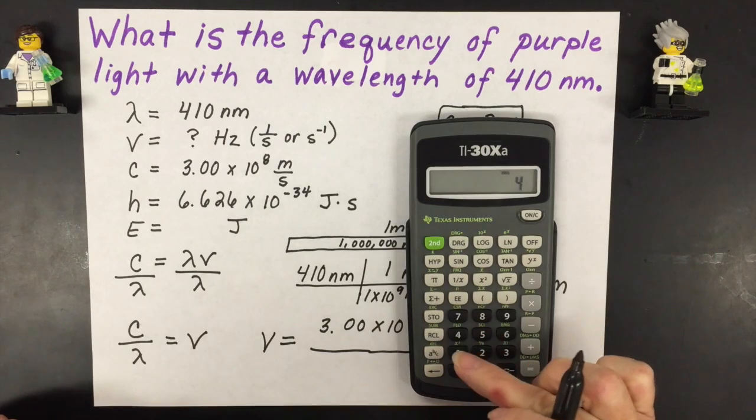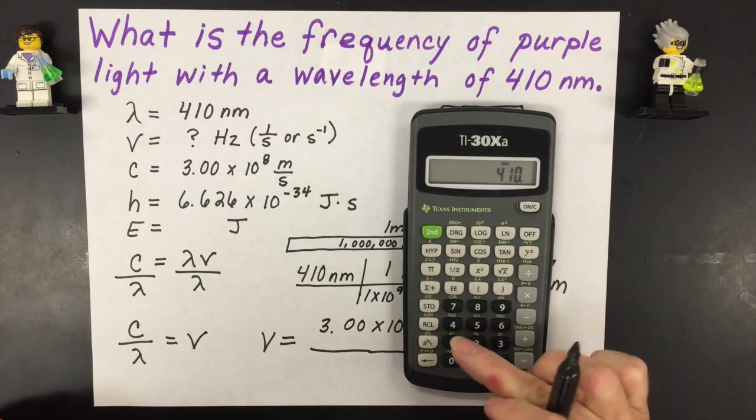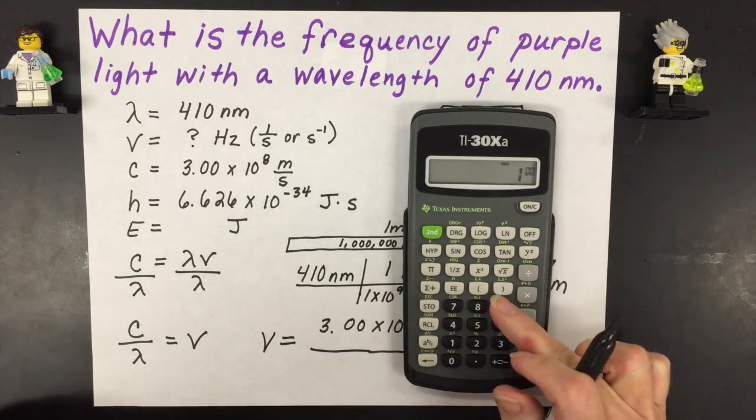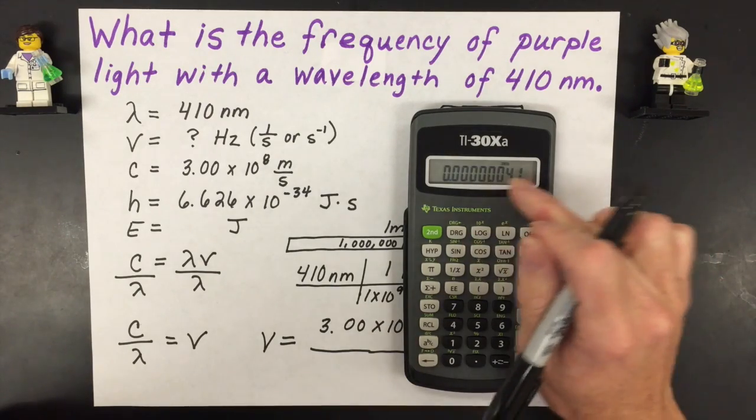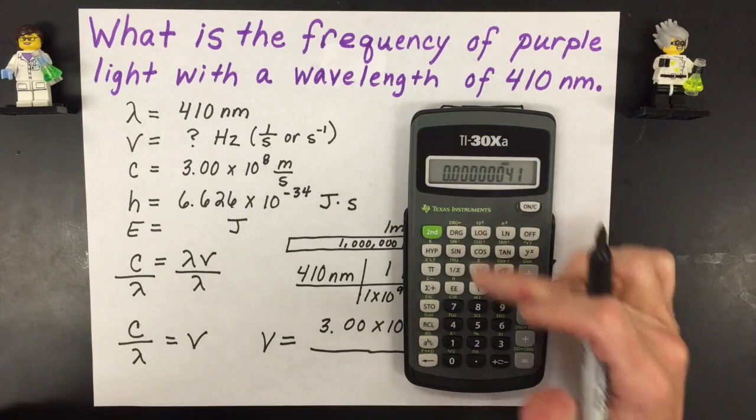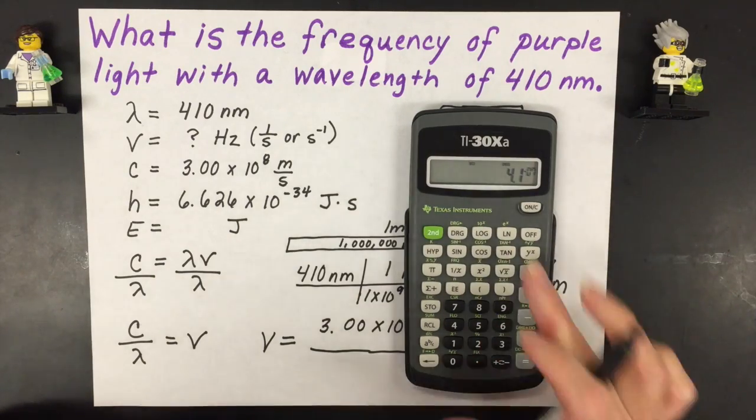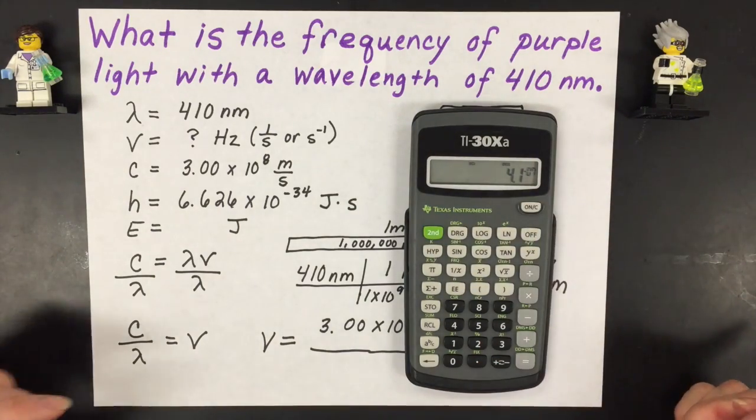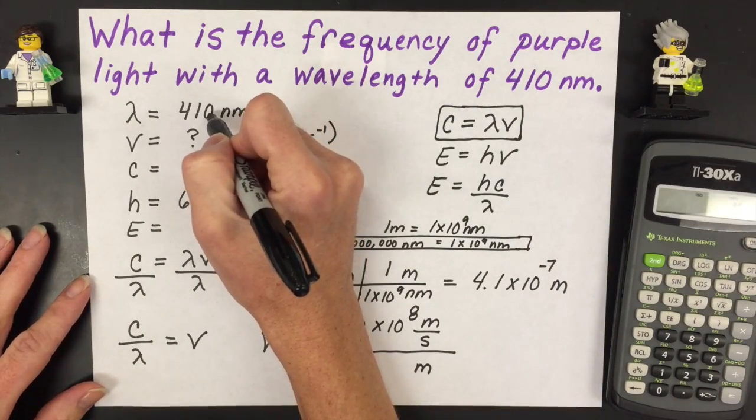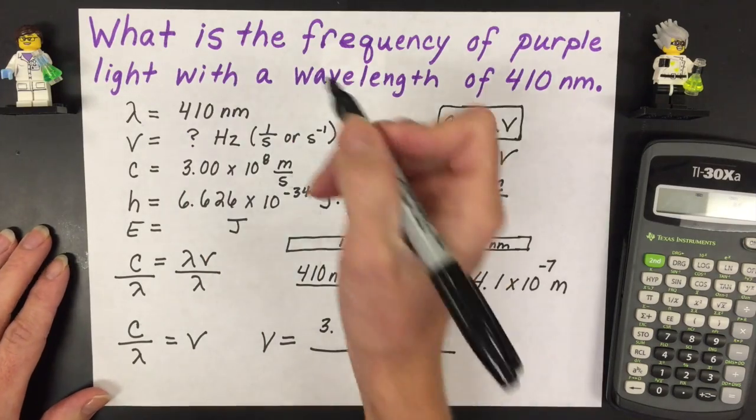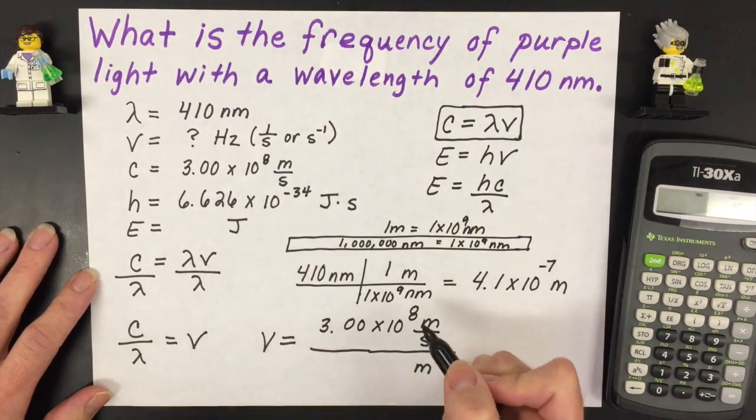So you're going to take and have 410 and you're going to divide it by one EE and then nine. And so again if it's not in the right scientific notation in this calculator you can hit second and then the five and then it puts it as 4.1 to the negative seventh. And that's good because I actually don't have a significant figure here.